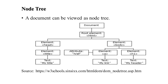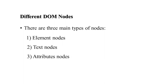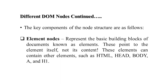A document can be viewed as a node tree — document, root element, elements, then further child elements with text. There are different types of nodes. Element nodes are the basic building blocks of the document, pointing to the element itself, not its content. These tags can contain other elements such as HTML, head, body, an anchor tag, or H1 heading. Element nodes only refer to the element itself.